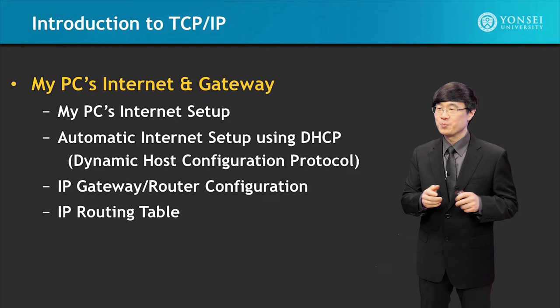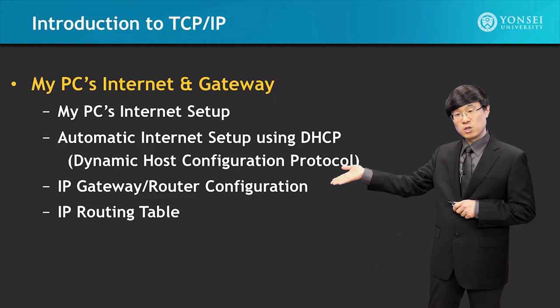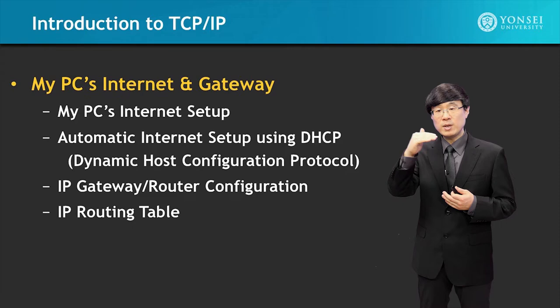We start off with MyPC's Internet Setup, then we go into the Automatic Internet Setup using DHCP, which is the Dynamic Host Configuration Protocol. Then the IP Gateway and Router configuration, and based on that configuration, we're going to see how the IP routing table is set up, and how it's used when a packet comes into the router or the gateway — how that routing table is used to find which way to send it out.